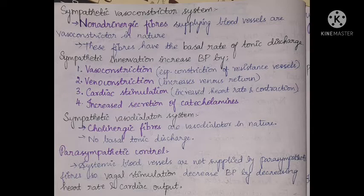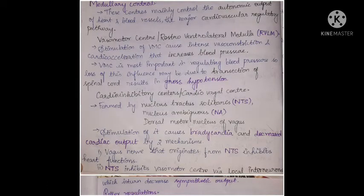Parasympathetic control of systemic blood vessels: systemic blood vessels are not supplied by parasympathetic fibers, so vagal stimulation occurs indirectly, decreasing BP by decreasing heart rate and cardiac output. Medullary control: these centers, mainly located in the medulla, control both cardiac output and blood vessels. The two main centers are the vasomotor center (rostroventrolateral medulla) and the cardioinhibitory center (cardio-vagal center).